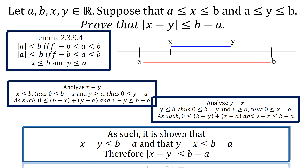If we analyze X minus Y, we see that X is less than or equal to B, and as a result, 0 is less than or equal to B minus X. And Y is greater than or equal to A, and as a result, 0 is less than or equal to Y minus A. And as we can see through algebra, X minus Y is less than or equal to B minus A. We can do the same thing for Y minus X and find that Y minus X is less than or equal to B minus A. Therefore, by lemma 2.3.9.4, it has been proven that the absolute value of X minus Y is less than or equal to B minus A.